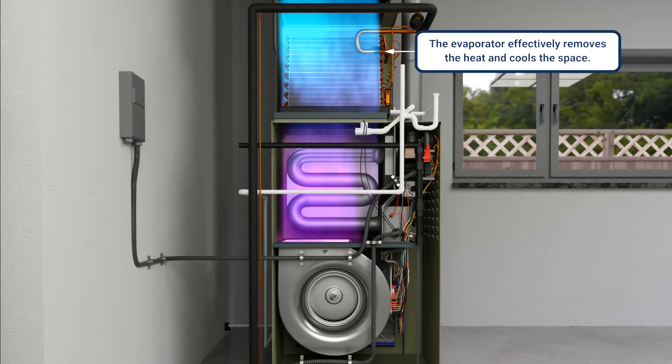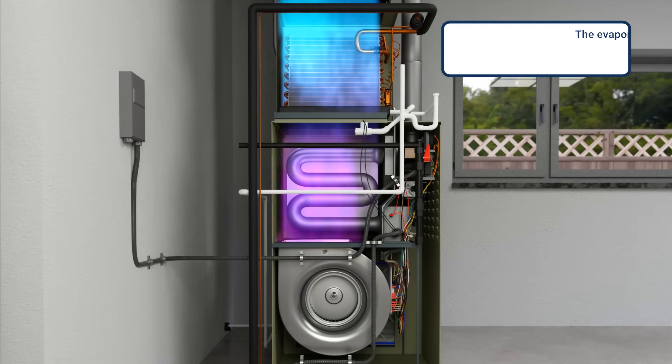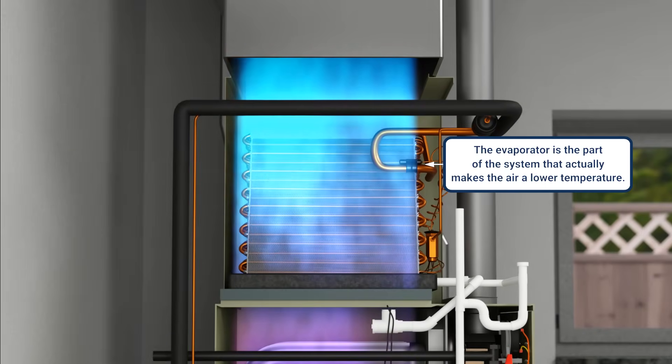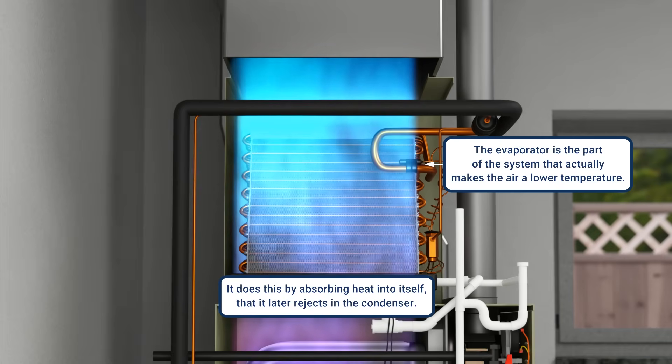This is why I also call the evaporator the heat absorber. The evaporator is the part in the system that actually makes the air a lower temperature, or what we would call cold air, and it does this by absorbing heat into itself, that it then later rejects in the condenser.